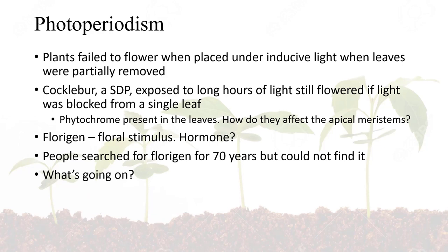There are other interesting aspects of photoperiodism. Plants fail to flower under inductive light conditions when leaves are partially removed — so we know leaves are important for this process. Cocklebur, a short day plant exposed to long hours of light, still flowered if light was blocked from a single leaf. Phytochromes present in the leaves detect day length. But how does that signal reach the apical meristem to switch from vegetative to reproductive growth? For about 70 years, scientists searched for this mysterious substance — named florigen — thinking it might be a hormone, but could not find it.